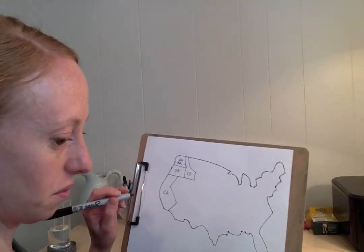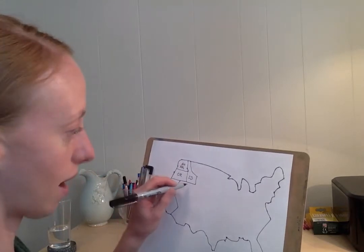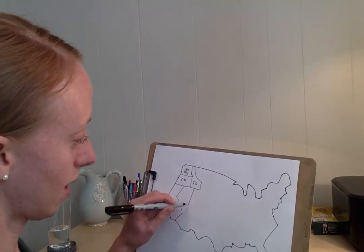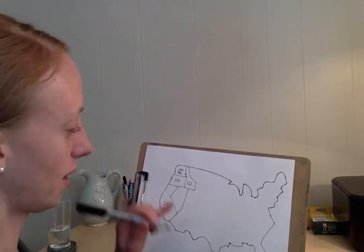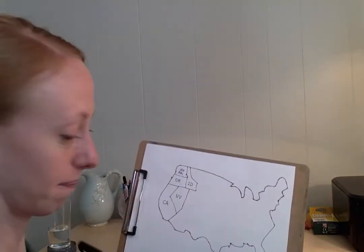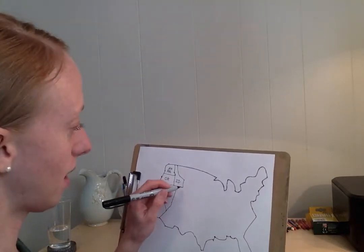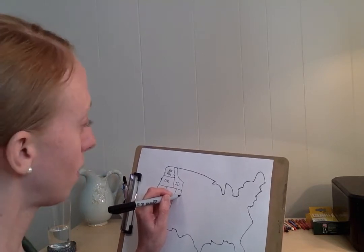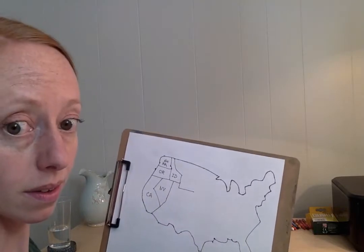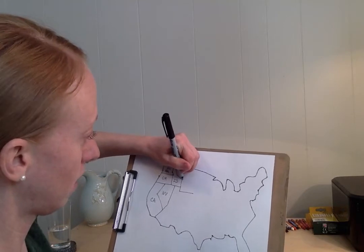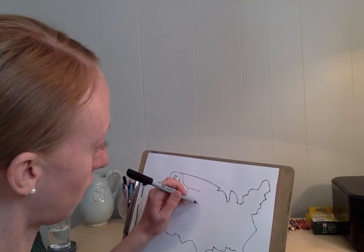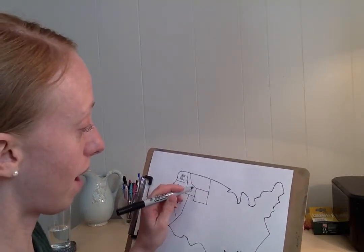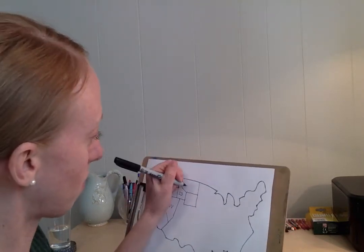Next we're going to do Nevada. Go to the middle of Idaho and go straight down until you get close to California, and connect those. That's pretty close. Then at the edge of Idaho, go straight down for a little bit, then straight over, and the same thing on top — straight over. That line connects the angle all the way up. So from Idaho we went down, over, made a rectangle, and went straight up. This is Montana, and this is Wyoming.